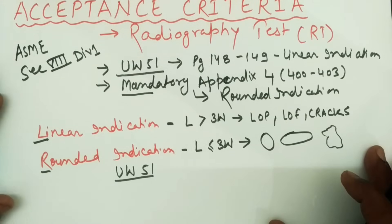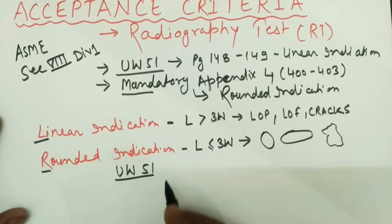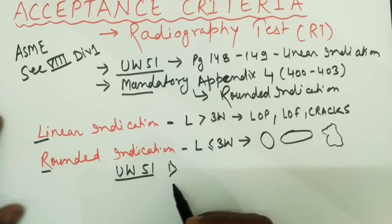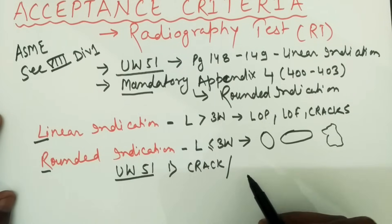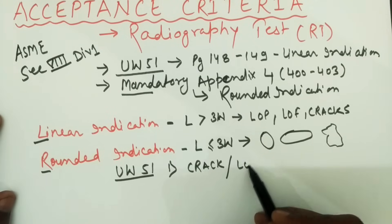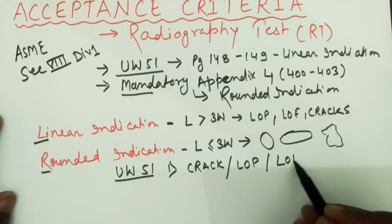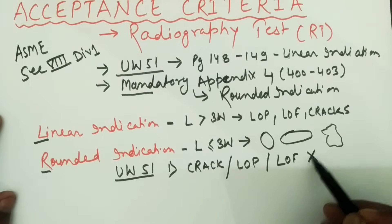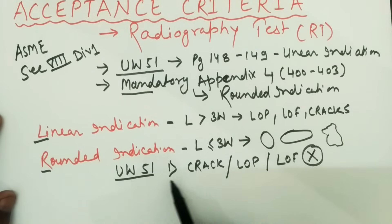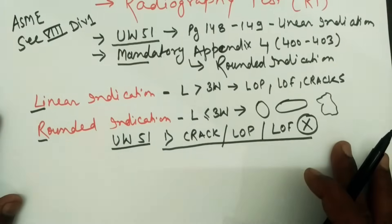Under UW-51, there are three acceptance criteria. The first criterion is that any crack, lack of penetration (incomplete penetration), or lack of fusion (incomplete fusion) shall not be accepted — these must be rejected. So cracks, LOP, and lack of fusion shall be rejected.